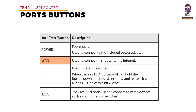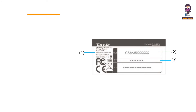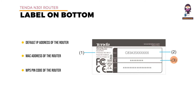Jack ports and buttons — Power: the power jack is used to connect to the included power adapter when connecting this router to the internet. RST: used to reset the router. When the system LED indicator blinks, hold the button down for about eight seconds and release it when all the LED indicators blink once. LAN 1/2/3: LAN ports used to connect to wired devices such as computers or switches. Label on the bottom: default IP address of the router — you can use the IP address to access the router web UI.